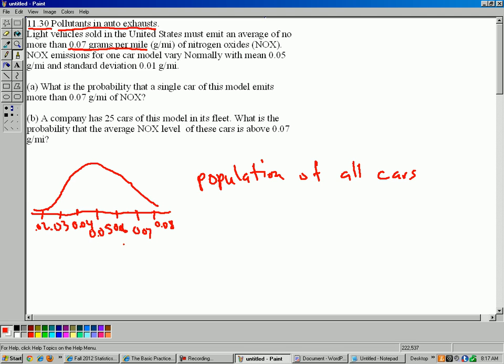So out of the entire population of cars, we know 68% of the cars are between 0.04 and 0.06 grams per mile. 95% of cars between 0.03 and 0.07. So there's quite a wide variation of nitrogen oxides emissions from the general public of cars.